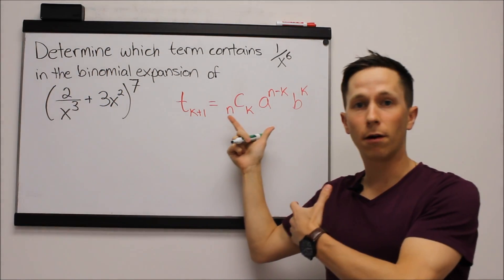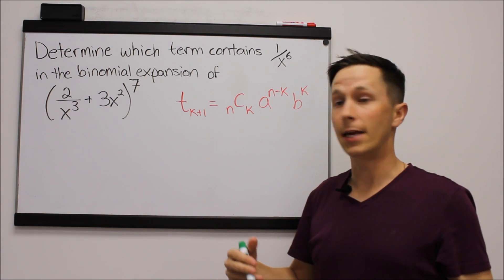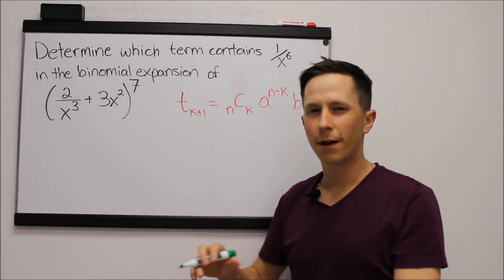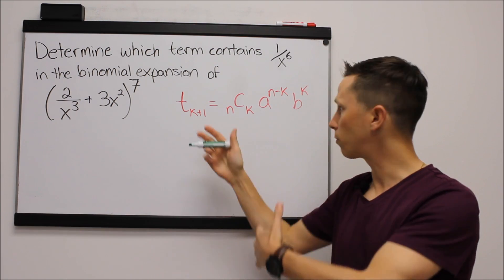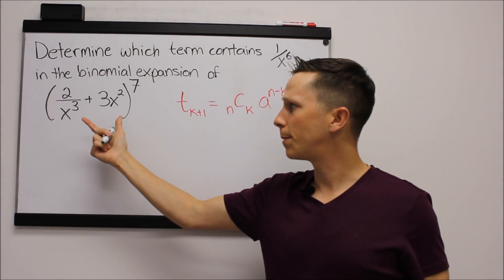I've written up here a formula which is actually on the formula sheet for this exam, and it is the formula to find the k plus first term of the binomial expansion. If you're not too sure what that means, we're going to go through what all of these different letters mean, but let's quickly see why this is a binomial expansion.